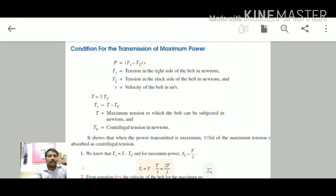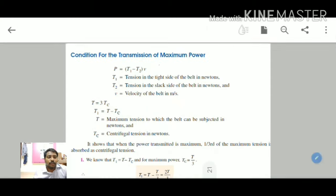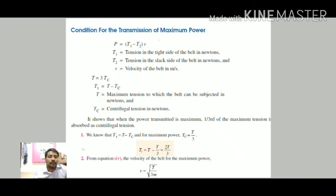For the condition of maximum power transmission, P = (T1 − T2) × V, and the condition is that the total tension T = 3 × Tc, giving T1 = T − Tc. The maximum velocity for maximum power is V = √(T/(3M)).